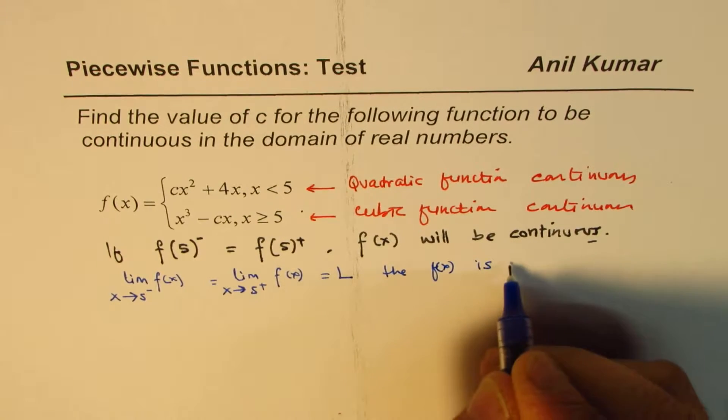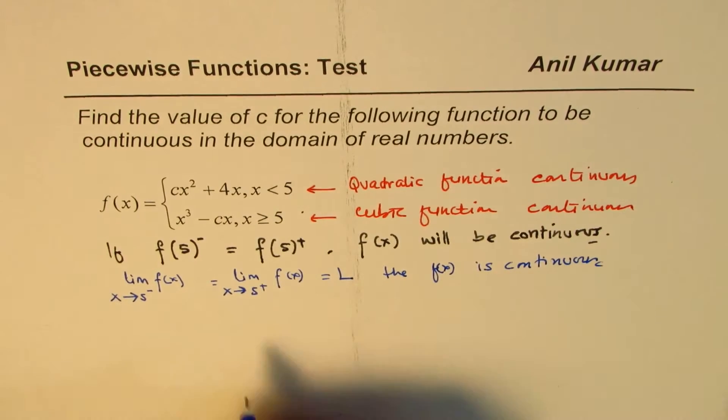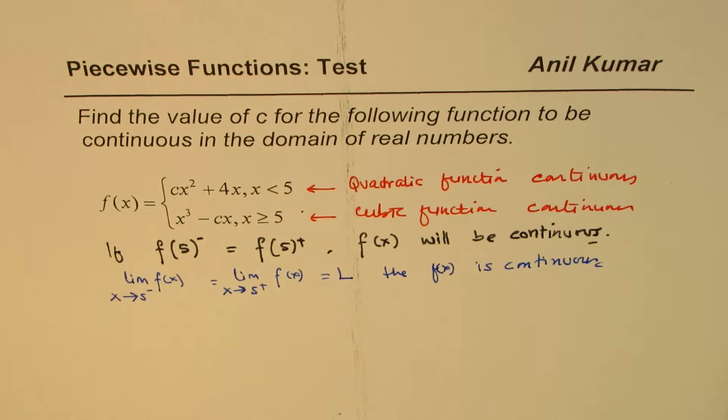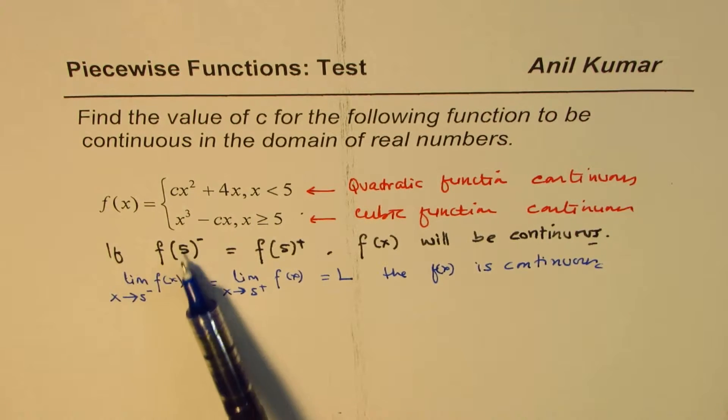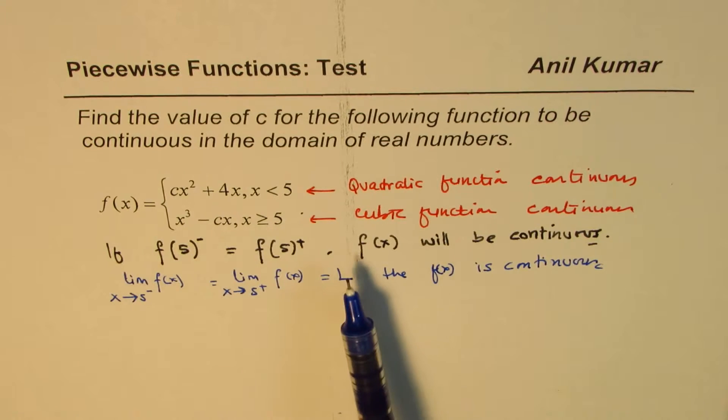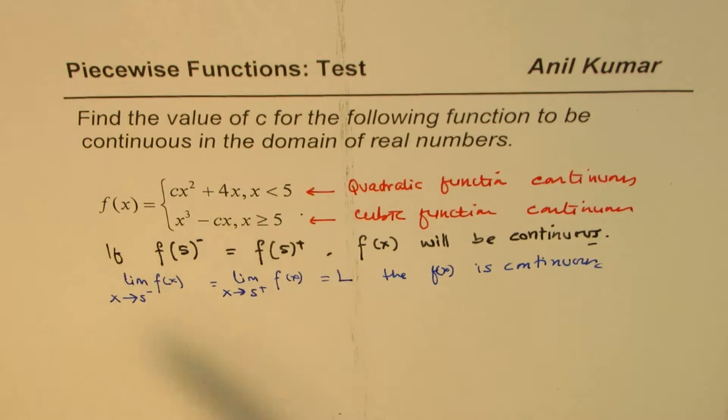Let's say f of x is continuous. Depending on what you have learned so far, some of the students have not yet covered limits. So they may think about when you approach 5, x equals 5 from both sides, if you approach the same value, then the function is continuous.